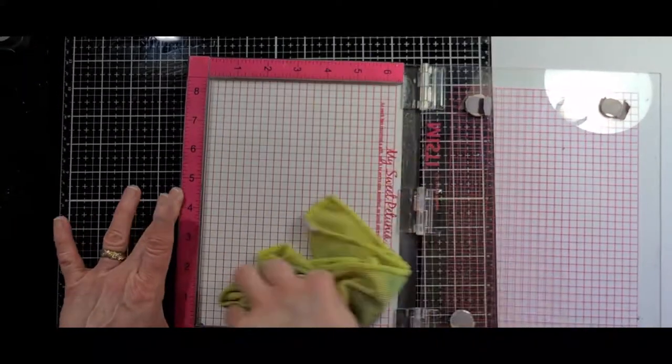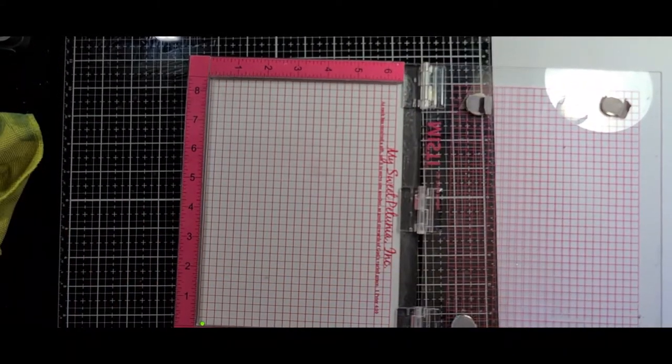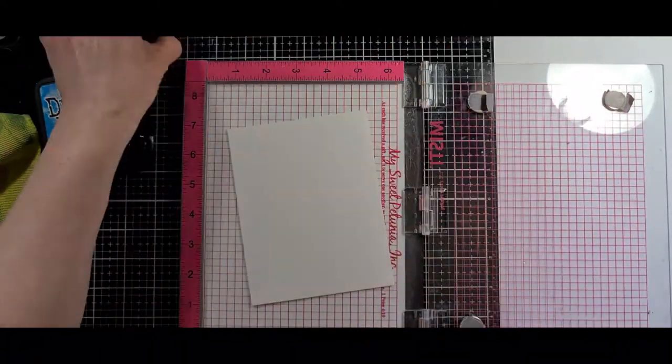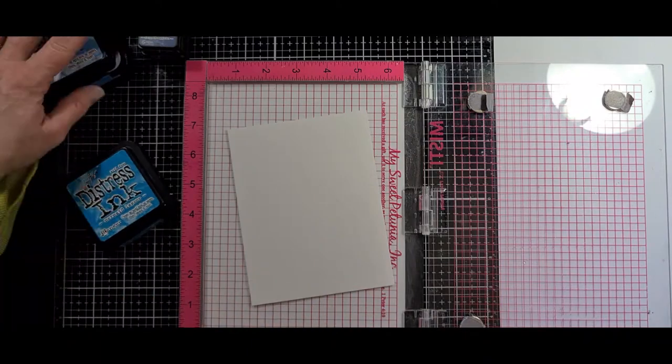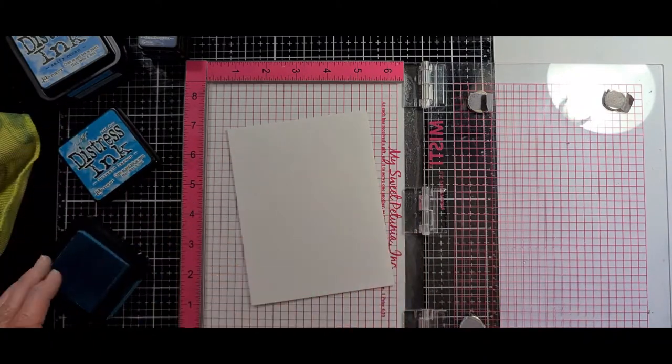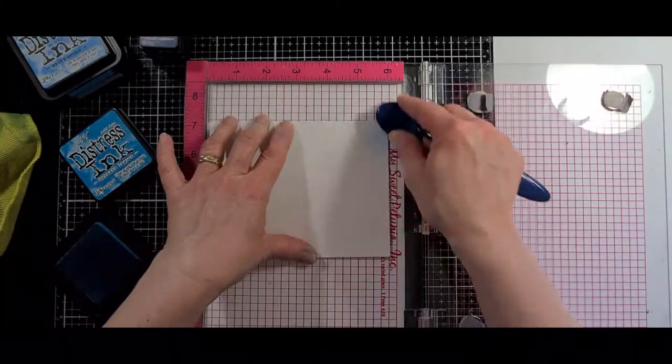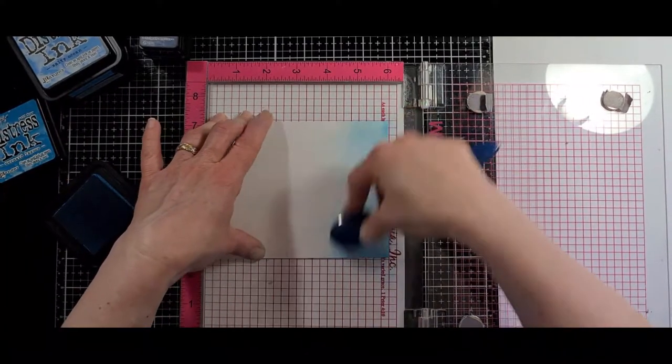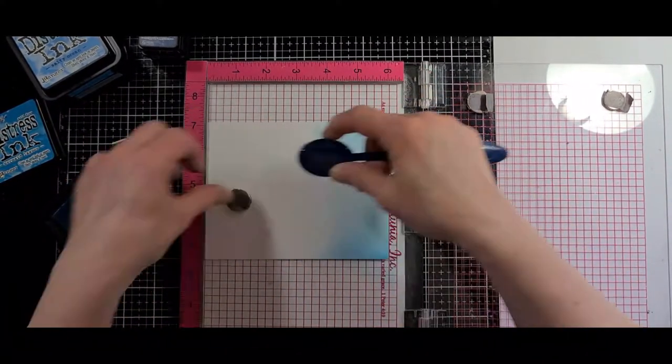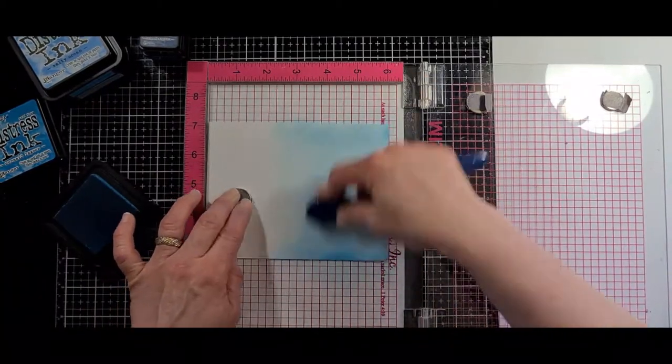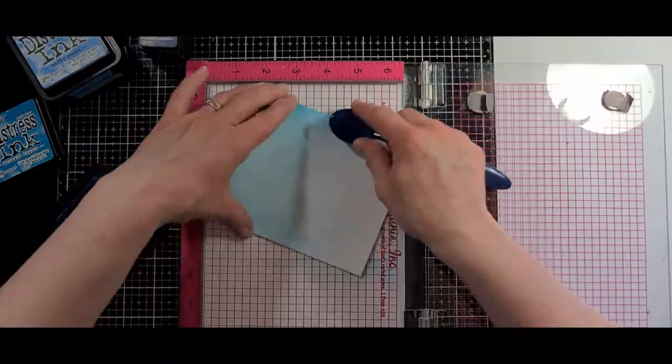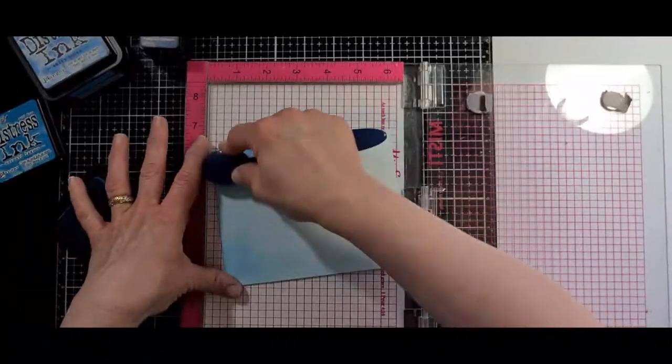And so for my third one, I used regular Distress inks for this, and I grabbed a few more colors than I did for the other ones. This was going to be the water one, and so I grabbed five different blues. I used a mix of Salty Ocean, Mermaid Lagoon, Faded Jeans, Blueprint Sketch, and Chipped Sapphire, and then I did add a green in there. I added pine needles in the end.